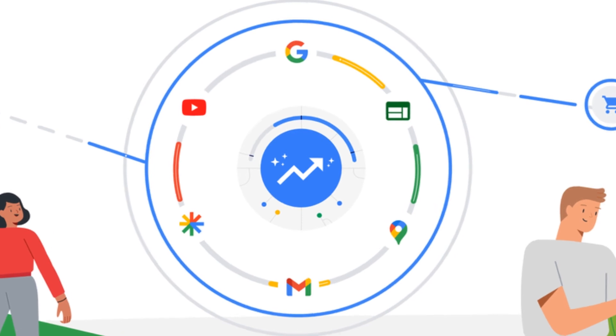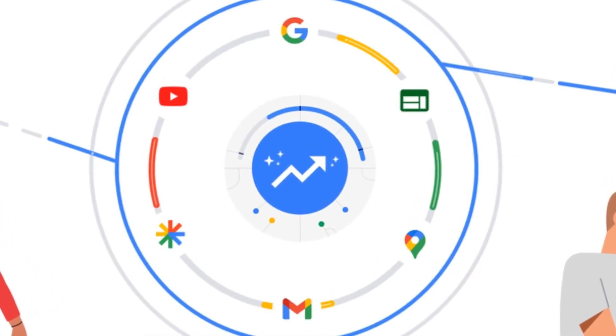Dynamic search ads, or DSAs for short, are a type of Google Ads campaign that automatically shows your ad for your website based on the content of your pages. These campaigns lead to three major benefits: they save you time, they allow you to show for searches that your potential customers are typing in, and they allow you to identify new keyword opportunities if you want to create a standard search campaign in the future. Take advantage of this campaign type while you can, because with Google's promotion of their performance max campaigns, I wouldn't be surprised if in the future they eliminated dynamic search campaigns at some point.